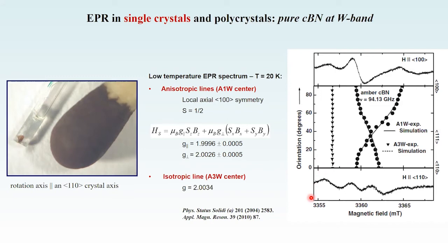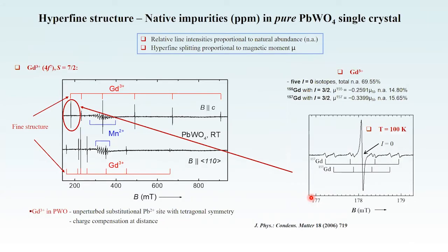I will now show you an example of identification of native impurities in a crystal based on isotopes. Isotopes with nuclear spin 3/2 give a four-line structure with specific splitting and intensity. The intense central line comes from isotopes with no nuclear spin.